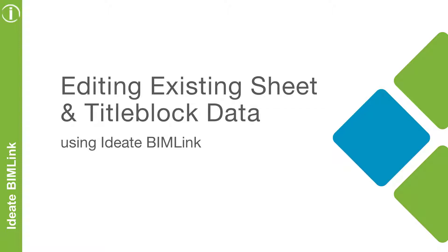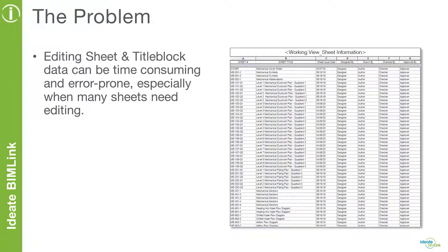In this video, we will focus on how to easily edit existing sheet and title block data using ID BIMLINK. One of the challenges with Revit is the ability to quickly edit sheet and title block information, especially on large projects that have hundreds of sheets and lots of parameter data to edit.